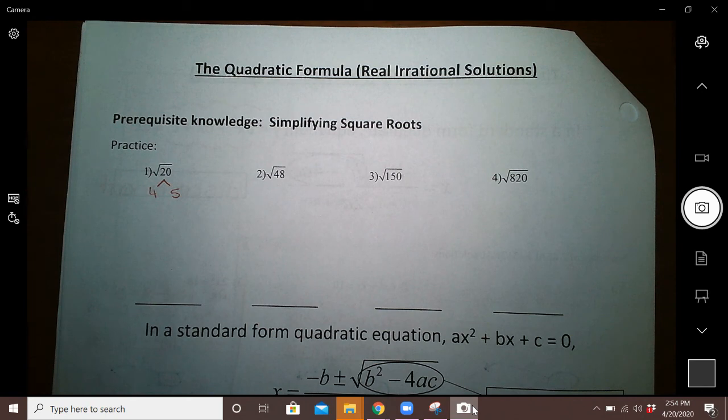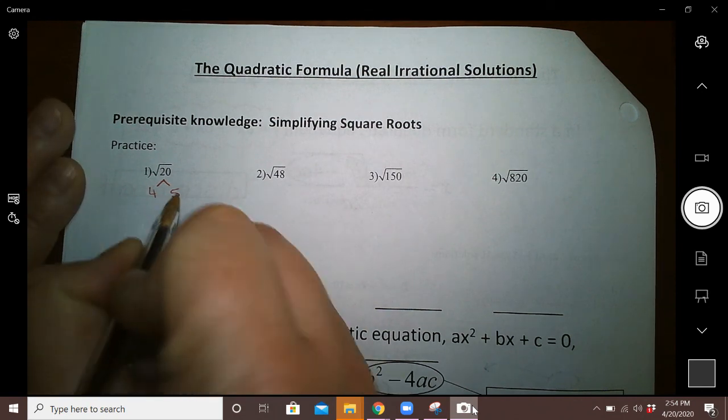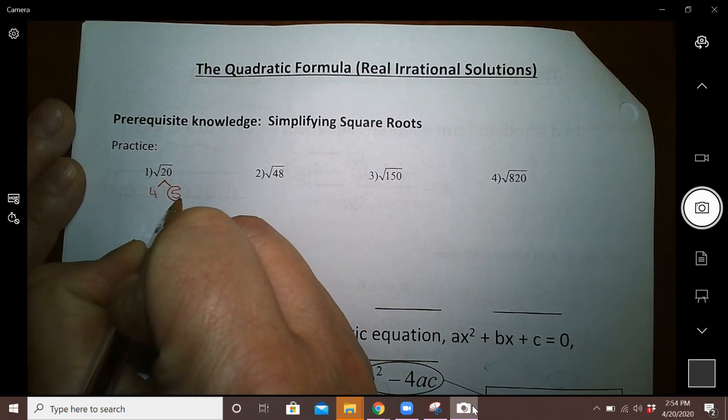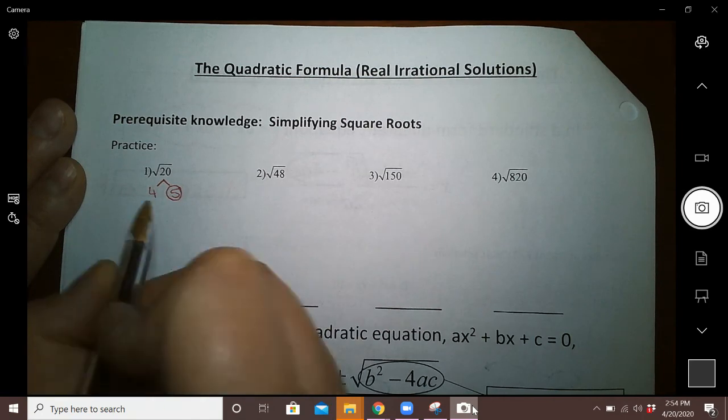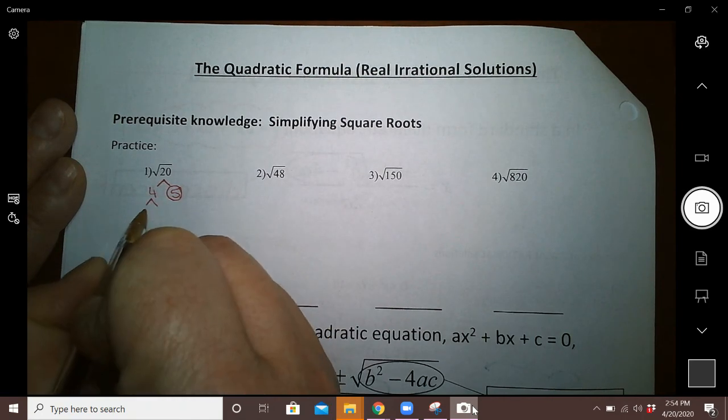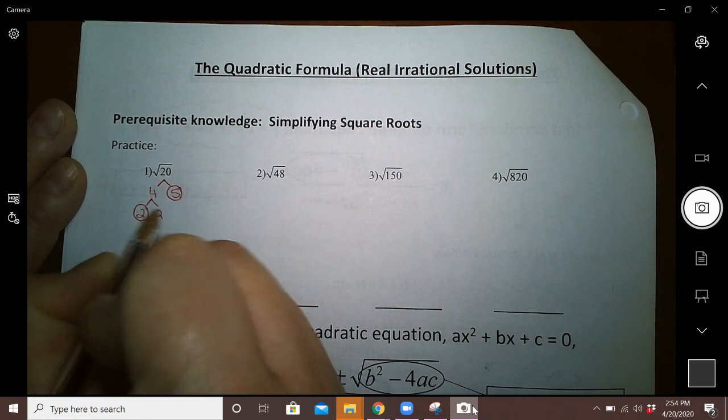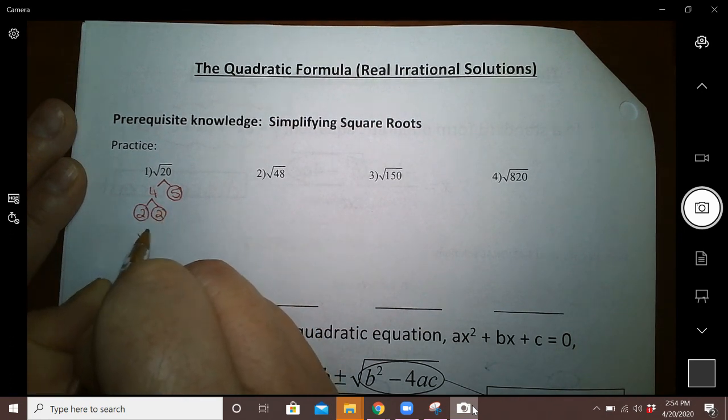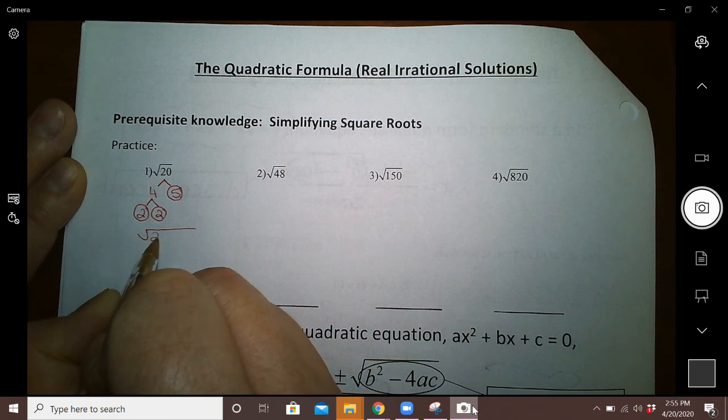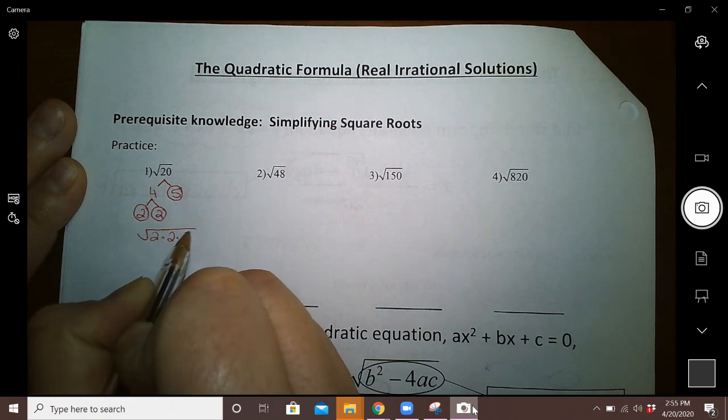The goal here is to keep breaking the factors down until we get a list of all prime numbers. So 5 is a prime number, so that side of the tree is done. 4 is not prime; I can break 4 into 2 times 2, which are both prime numbers. So the square root of 20 could be rewritten as 2 times 2 times 5.